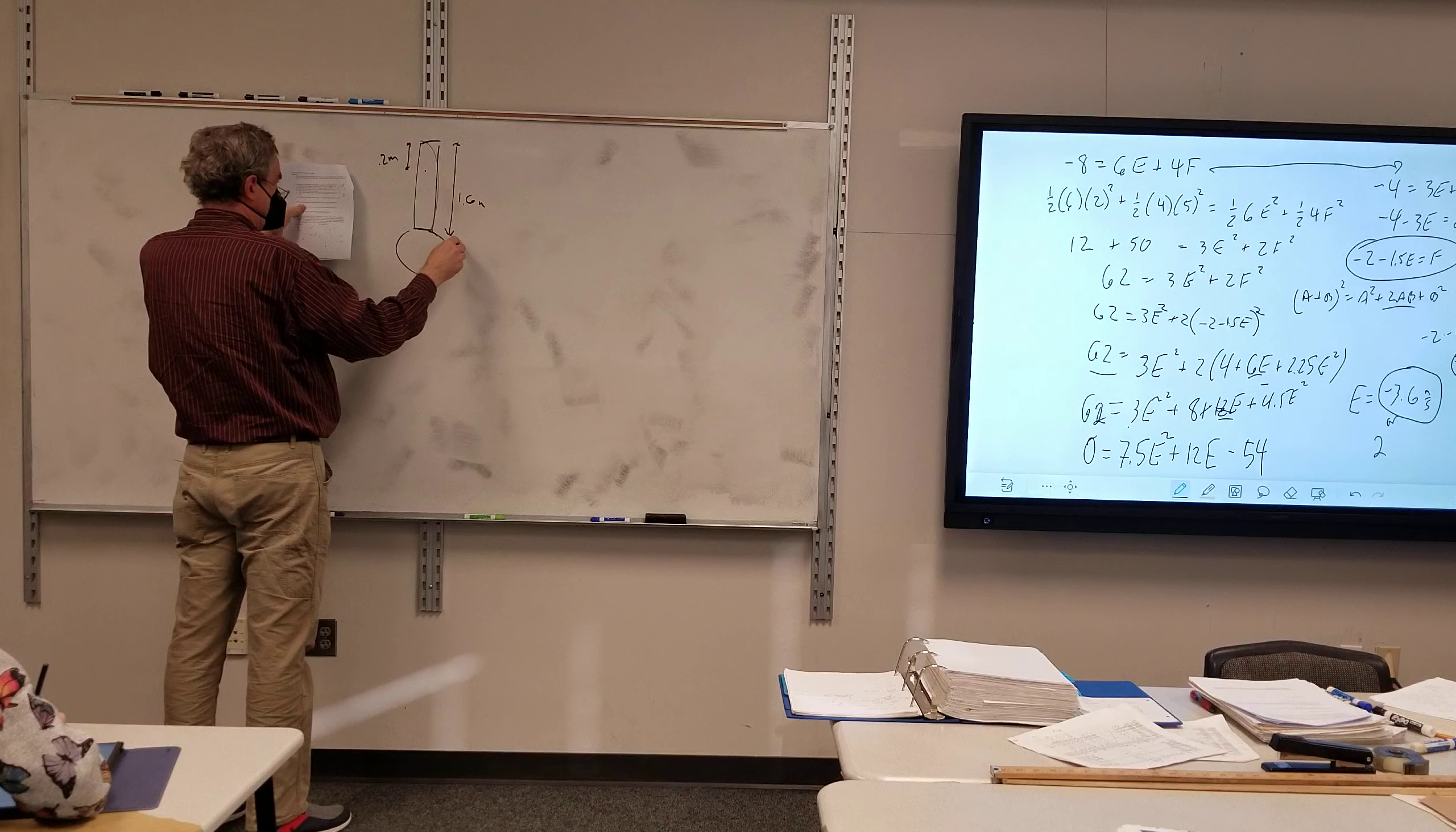So this is plus 7. This is plus 14. This is negative 18. So E becomes negative 3.6 and F becomes 3.4 meters per second.